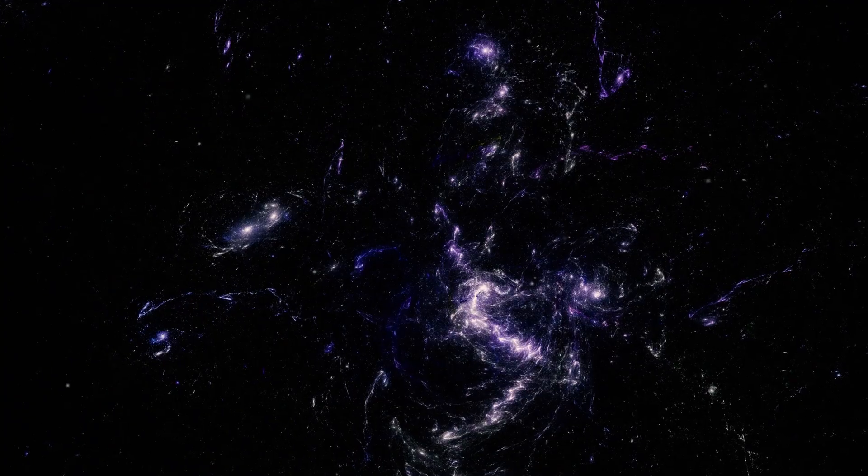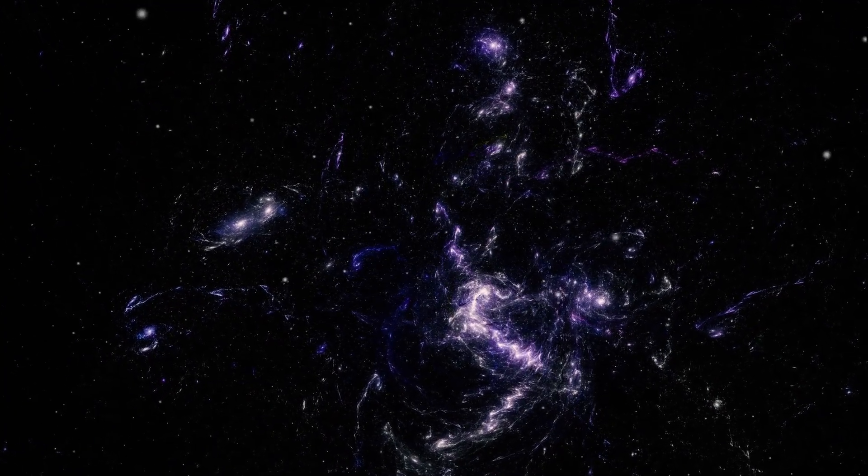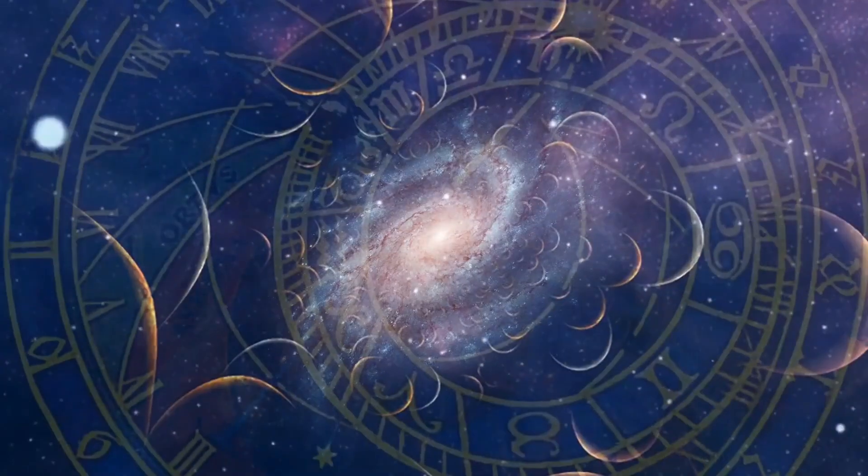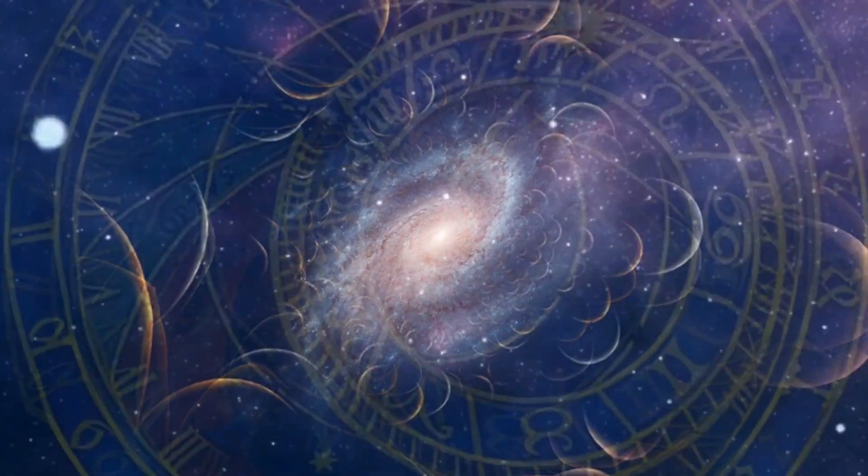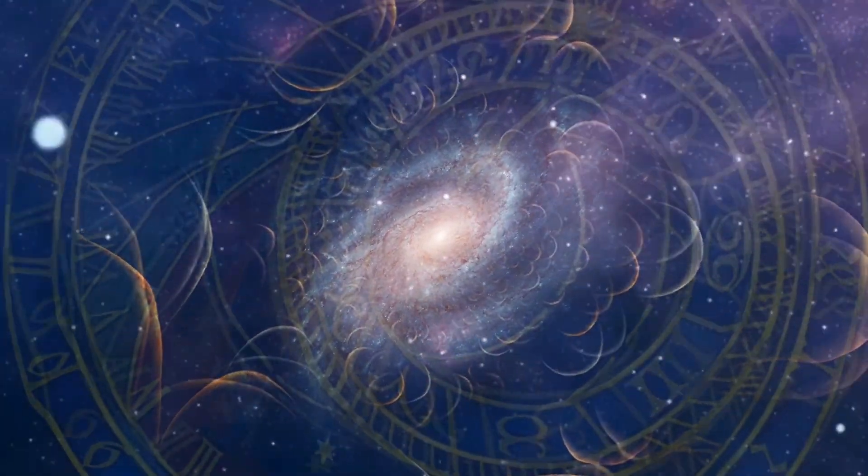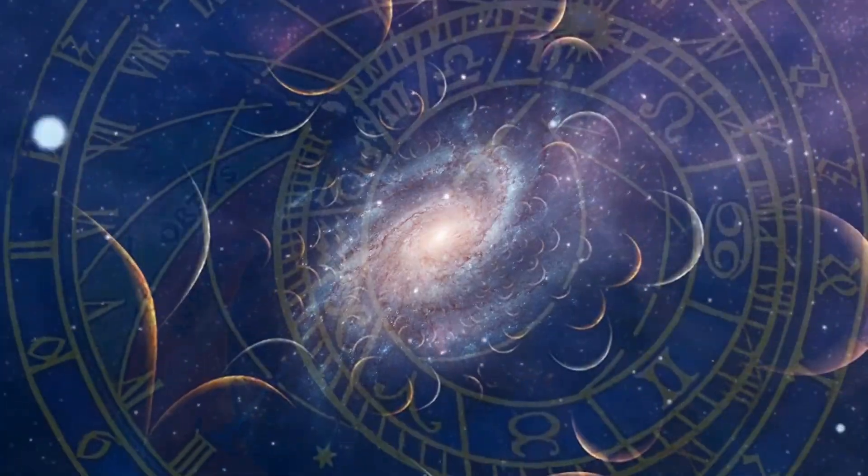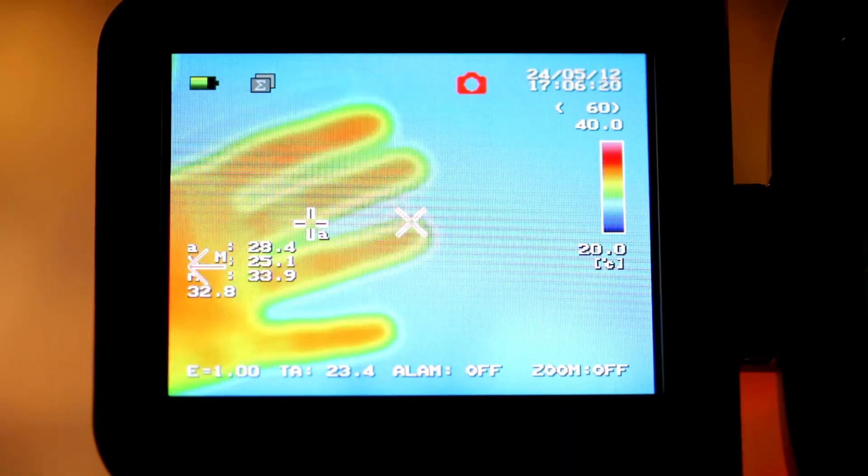Red dwarf stars like Proxima Centauri are the unsung heroes in the search for habitable planets. They're small, dim, and often overlooked, but they are actually the most common type of star in the entire galaxy. And here's why they matter.